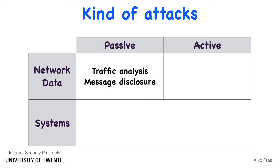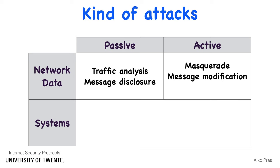Active attacks on network data include masquerade, sending data using the identity of someone else; message modification, changing the contents of traffic exchanged over the network; as well as replay, sending a certain message multiple times.